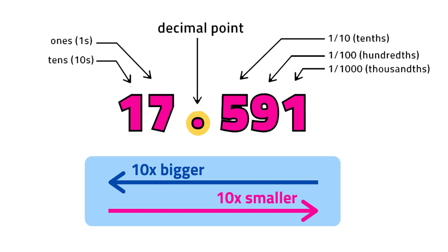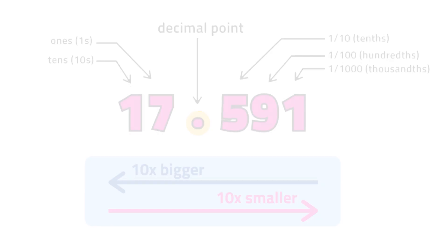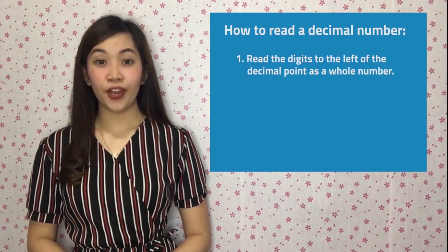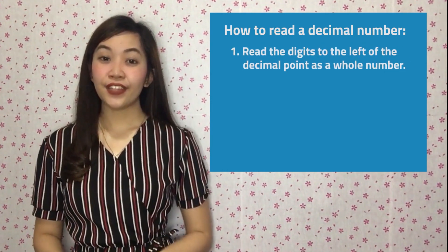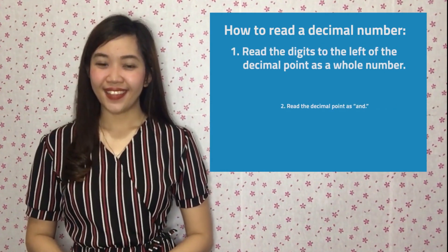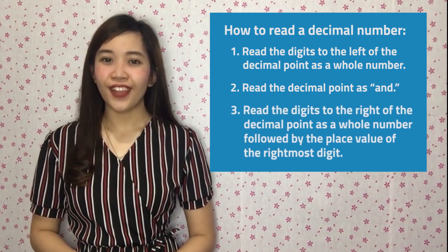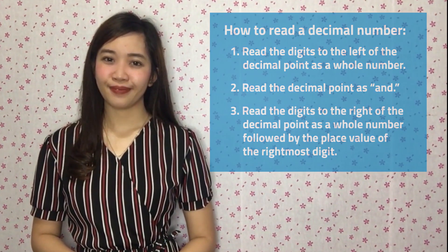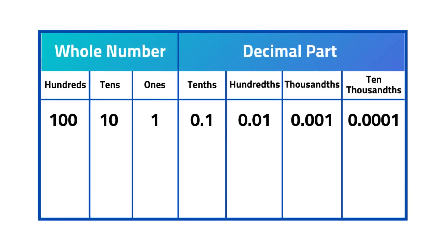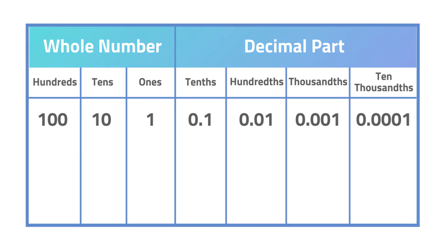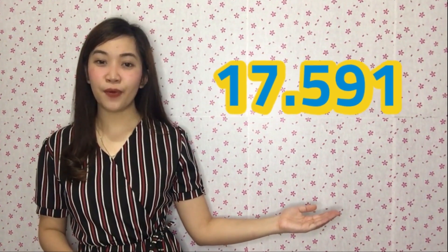Can you read this decimal number? Don't worry, I will help you. To read a decimal number: first, read the digits to the left of the decimal point as a whole number. Second, read the decimal point as 'and.' Third, read the digits to the right of the decimal point as a whole number followed by the place value of the rightmost digit. To help us read and write decimals properly, we can use a place value chart like this. Therefore, we can read this decimal number as seventeen and five hundred ninety-one thousandths.